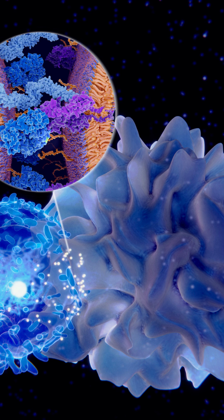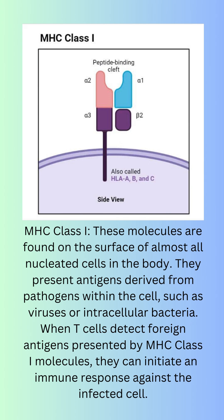The two classes of MHC are: MHC class 1 — these molecules are found on the surface of almost all nucleated cells in the body. They present antigens derived from pathogens within the cell, such as viruses or intracellular bacteria. When T cells detect foreign antigens presented by MHC class 1 molecules, they can initiate an immune response against the infected cell.